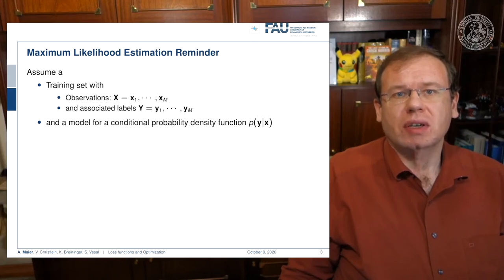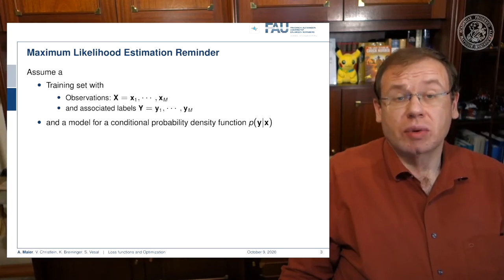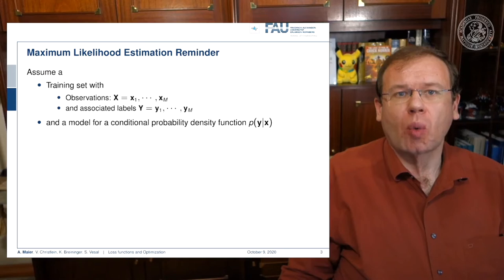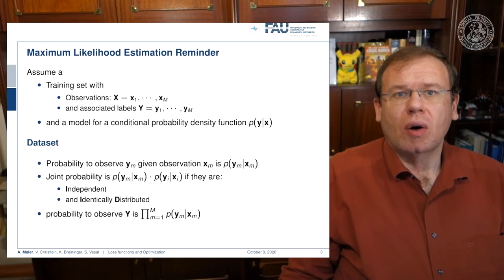Interestingly, many of those loss functions can be put in a probabilistic framework. This leads us to maximum likelihood estimation. In maximum likelihood estimation, we consider everything to be probabilistic. We have a set of observations capital X consisting of individual observations, associated labels Y from some distribution, and a conditional probability density function p(y|x) that describes how Y and X are related.